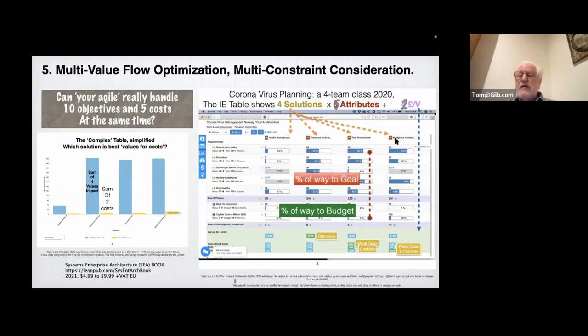Notice on this top axis, we have four different strategies. Let's call them top-level architectures. In this case, we're actually in a classroom in Norway on about the 8th of March, 2020, and we decided to plan what we do in Norway for the coronavirus. So that was the student project. These health architecture is just the tag or name of something which is described in far more detail, maybe 10 lines or 100 lines of detail.